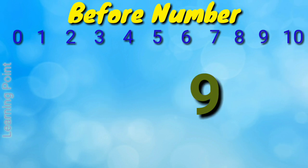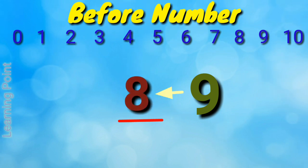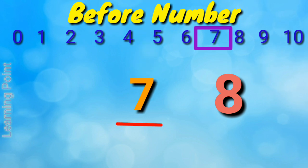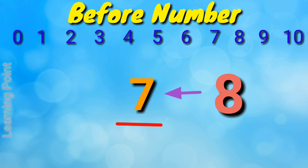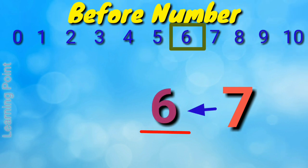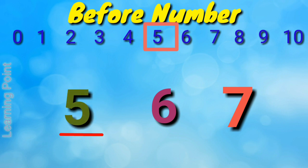You tell me which number comes before 9? That is number 8. Number 8 is before number 9. Which number comes before number 8? That is number 7. Number 7 is before number 8. What comes before number 7? That is number 6. 6 is before number 7.